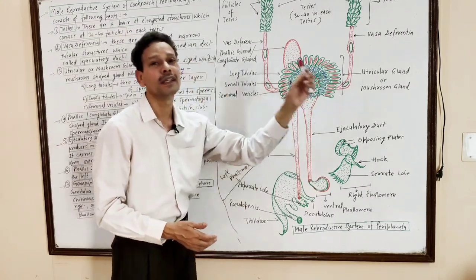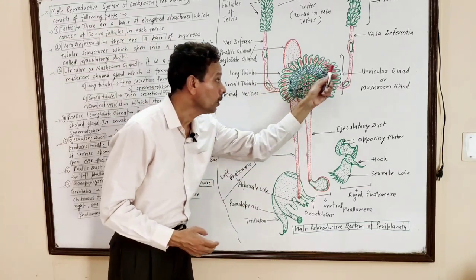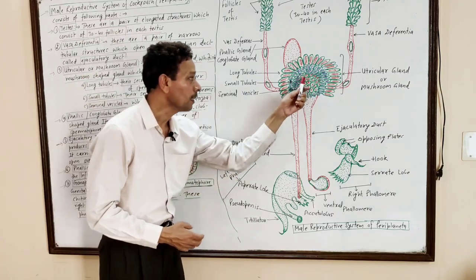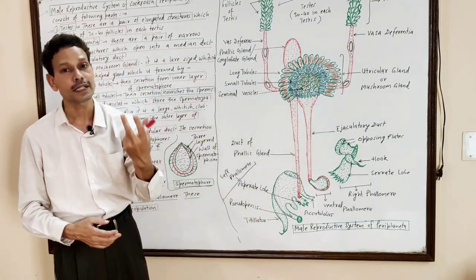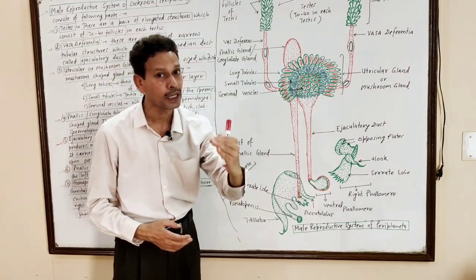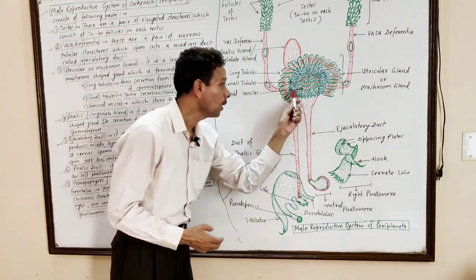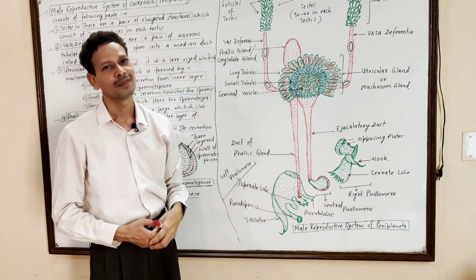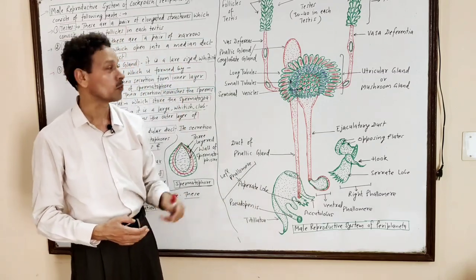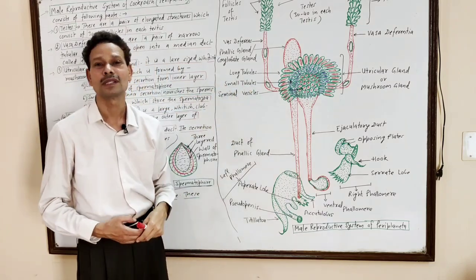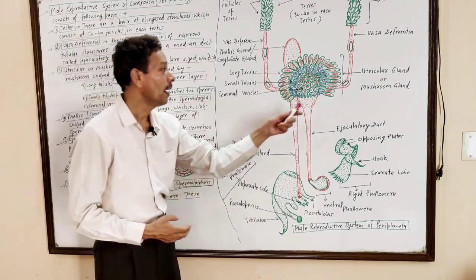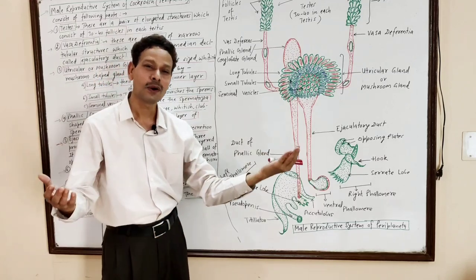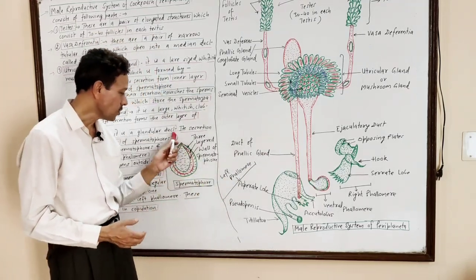On the periphery of the mushroom gland, long tubules are present. So the mushroom gland has three components: the central part with small rounded seminal vesicles for storage of spermatogonia; the middle part with small tubules whose secretion nourishes the spermatogonia; and the outer peripheral region with long tubules involved in the formation of spermatogonia.